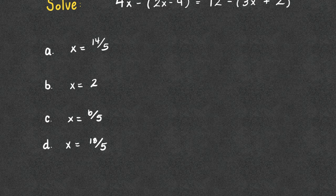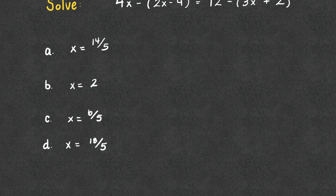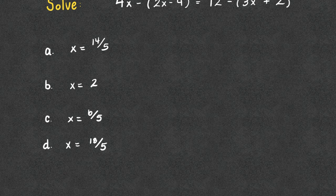All right, we are going to solve 4x minus 2x minus 4 equals 12 minus 3x plus 2. Is it A, x equals 14 fifths, B, x equals 2, C, x equals 6 fifths, or D,